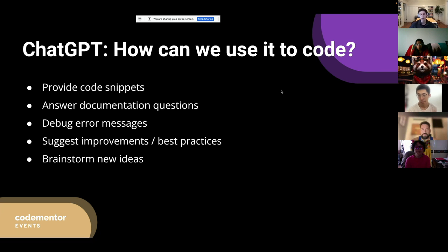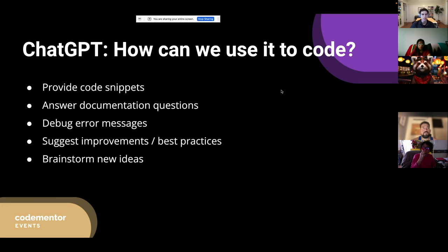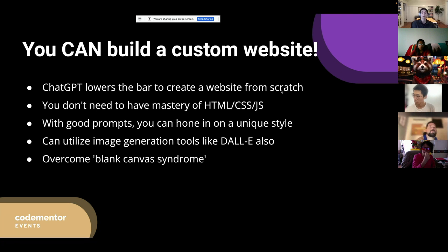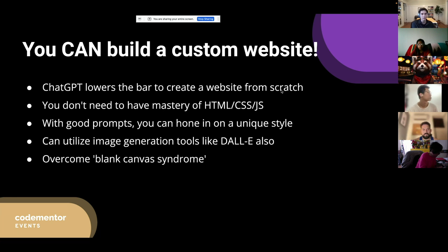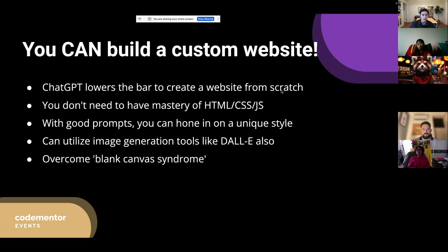ChatGPT can also help brainstorm new ideas. Someone before we got started said they named their company using ideas from ChatGPT. We're going to brainstorm ideas for our website later in the session using ChatGPT and then implement them. If there's one thing you take away, it's that you can build a custom website — we're going to build a portfolio website, kind of like yourname.com. It really helps lower the bar to create a custom website from scratch. You don't need mastery of HTML, CSS, and JavaScript.